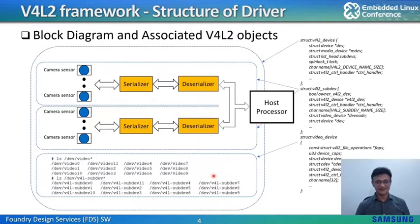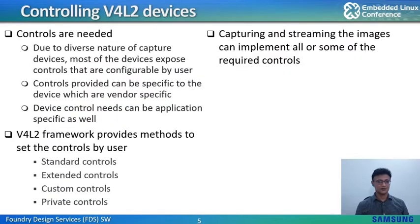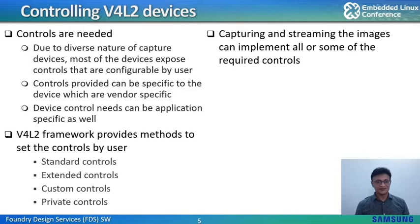Why are controls needed? Advanced streaming systems usually have multiple devices or IPs such as the image sensing processor, multi-format codec, or encoding and decoding of video streams. Often these devices provide configuration parameters that are controllable by the user, and controls provided can be vendor-specific. Device control needs can also be application-specific. The V4L2 framework provides methods to set these controls such as standard controls, extended controls, custom controls, or private controls. Capture devices can implement all or some of the required controls.